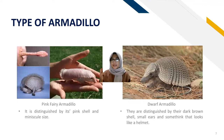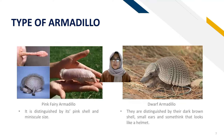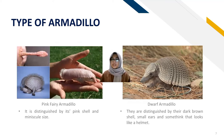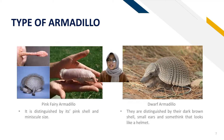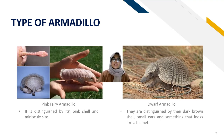The pink fairy armadillo lives in Central Argentina and is distinguished by its pink shell and miniscule size. The dwarf armadillo, also known as the pichi, lives in Argentina and Chile, and is distinguished by its dark brown shell, small ears, and something that looks like a helmet.